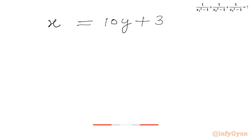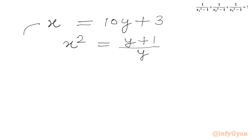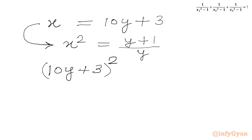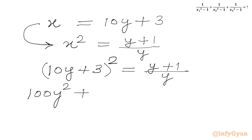So x equals 10y + 3. Substituting into equation 1: (10y + 3)² equals (y + 1)/y. Expanding using the (a + b)² identity: 100y² + 60y + 9 equals (y + 1)/y.